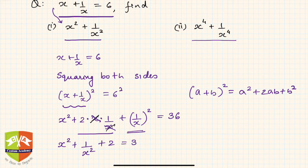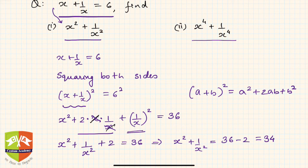Taking 2 to the other side: x² + 1/x² = 36 − 2 = 34.